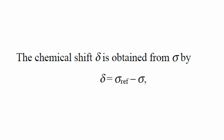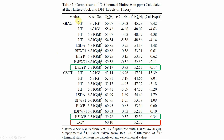This table shows results using two different methods — GIAO and CSGT — with different functionals and basis sets to calculate the chemical shift of 1-chlorosilatrane, and compares the calculated values with the experimental ones. We will use the B3LYP/6-31G* method to calculate the chemical shift of 1-chlorosilatrane and compare with the experimental values using both GIAO and CSGT methods.